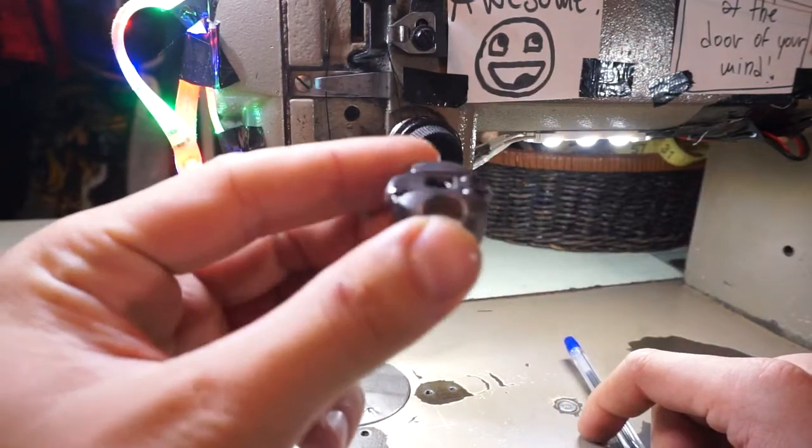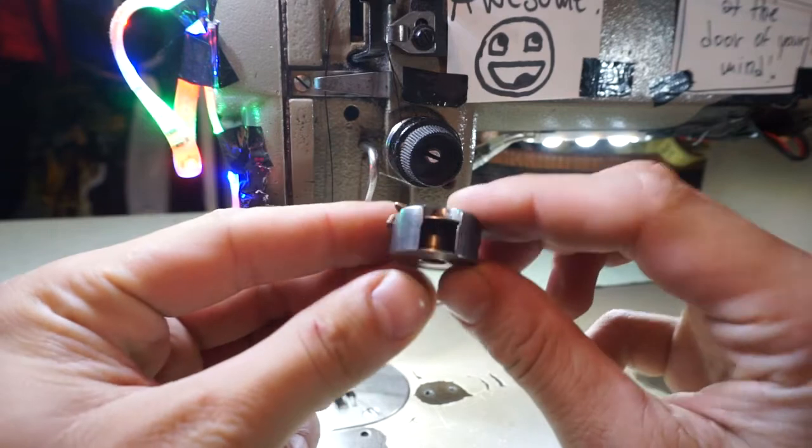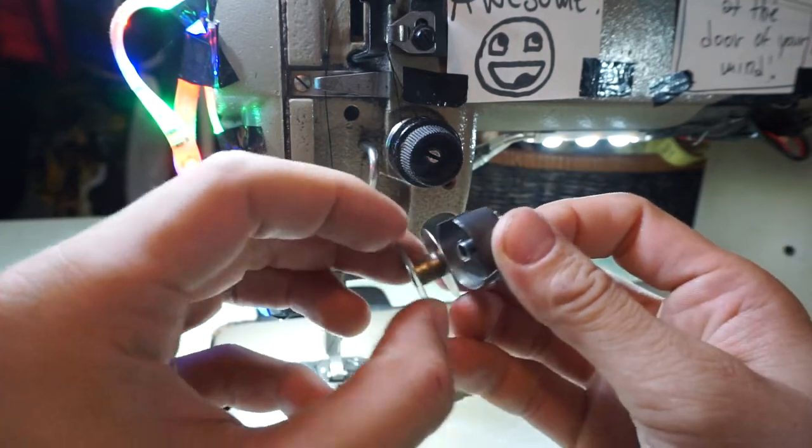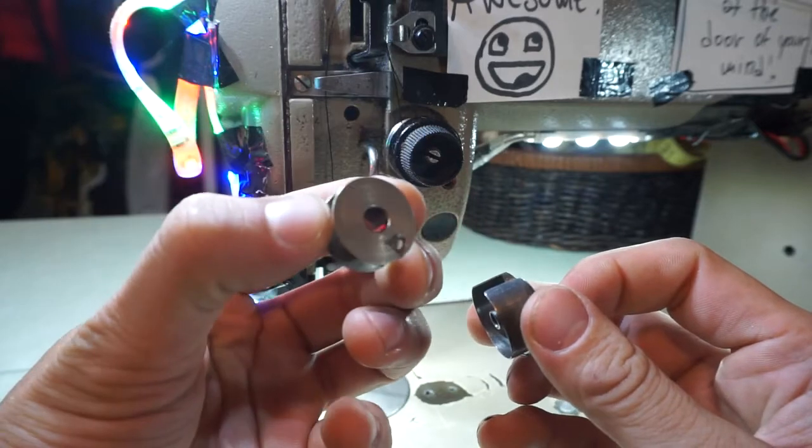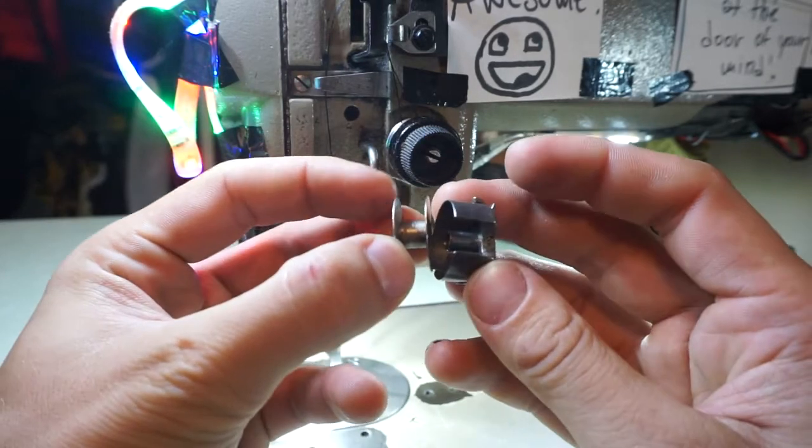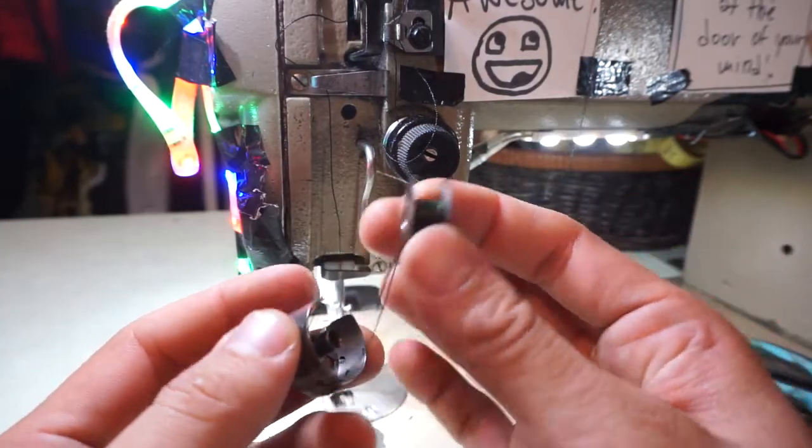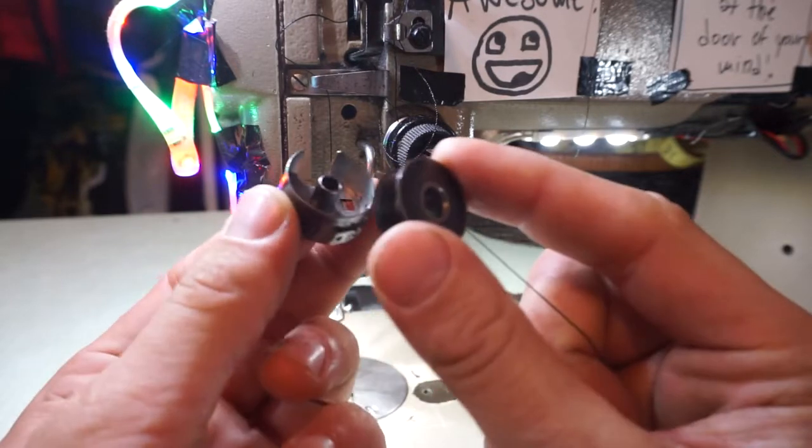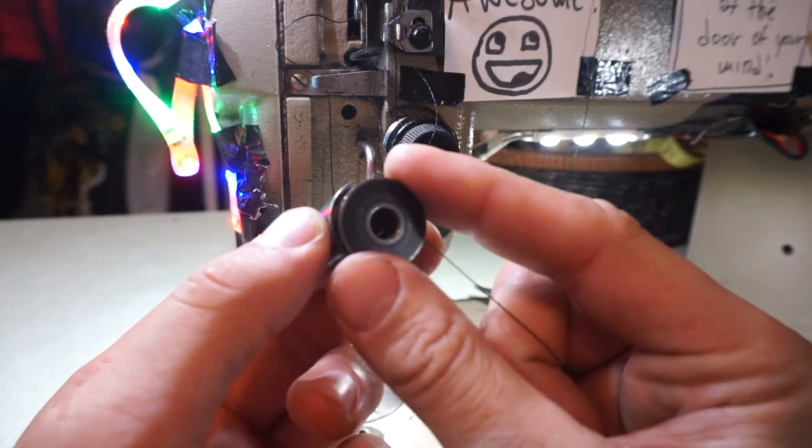Lower thread tension is determined by this metal bobbin case. It contains a thread spool which you put inside. So you have a spool of thread here which goes inside of this bobbin case.